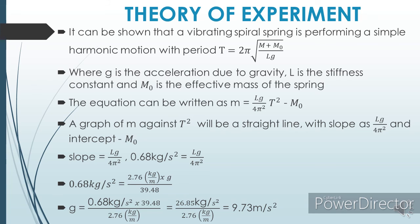And because I already had my value of slope, 0.68 kg/s², recorded, if I equate it with Lg over 4π² and make g subject of formula, you could see that from the calculation well stated here that g is equal to 9.73 m/s².